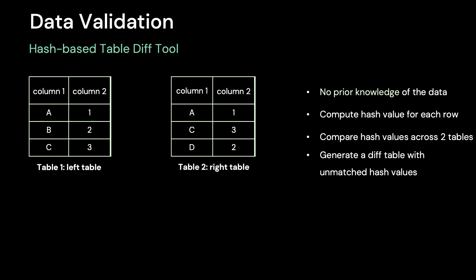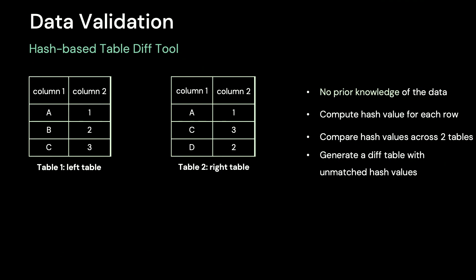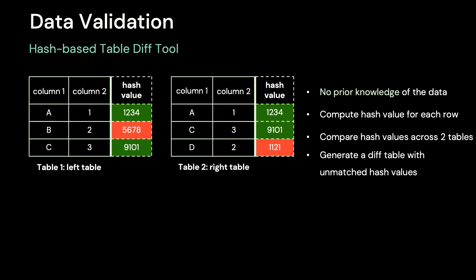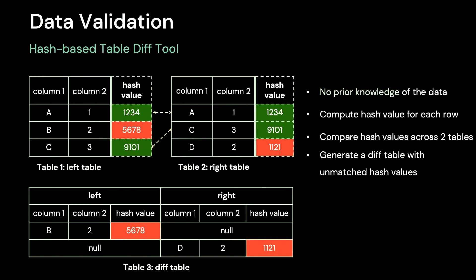Now let's discuss data validation and how to compare two tables. In the data world, a common way to compare two tables is to join them using a join key, usually the primary key. However, for large-scale migrations, we have no prior knowledge of the data and need an alternative solution. Here is our hash-based table diff tool, which is also a Spark job. It takes in two tables and first computes the hash values for each row, then compares the hash values across the two tables, and finally generates a diff table with unmatched rows. This approach allows us to efficiently validate data during our migration process.